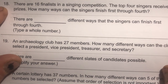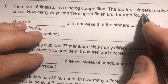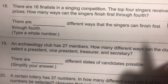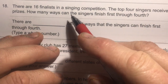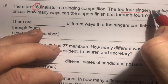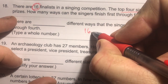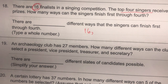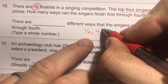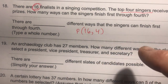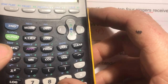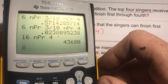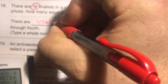Number eighteen: sixteen finalists in a singing competition, with prizes for first through fourth place. Since first, second, third, and fourth are distinct positions, the order matters — this is a permutation. 16 NPR 4 = 43,680. If it just said 'top four advance' with no ranking, it would be a combination.